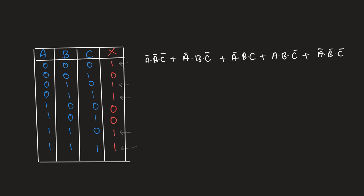So instead of this we could simply use kmaps to solve this. Let's look at how we do that. First let's make a table where we club all our inputs and outputs together. On one row you have A, and B C. A could either have the value of 0 or 1, and combinations of B and C could be 00, 01, 11, and 10.